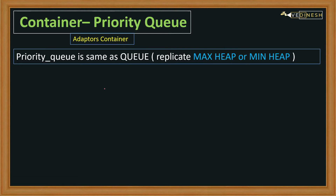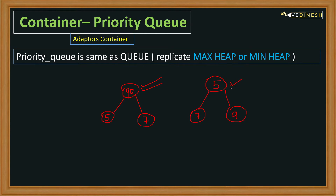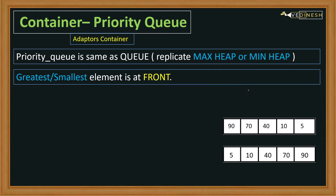Priority queue is similar to queue in that queue follows the FIFO principle, that is first in first out. Priority queue also follows the same FIFO principle. Moreover, priority queue replicates a max heap or min heap. In a max heap the highest element is in the root node, and in a min heap the smallest element is in the root node. Similarly in priority queue, the smallest or the greatest element is at the front.